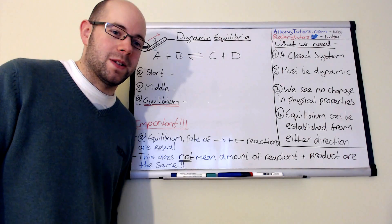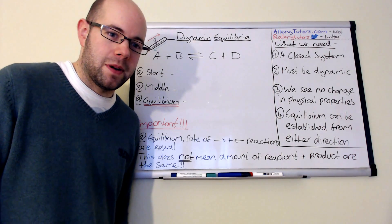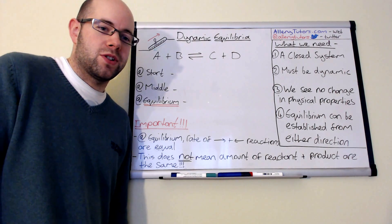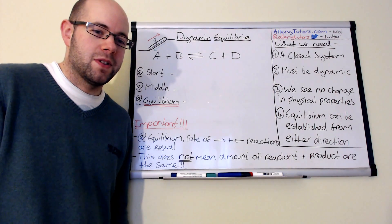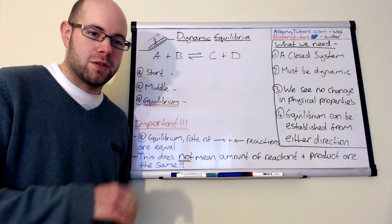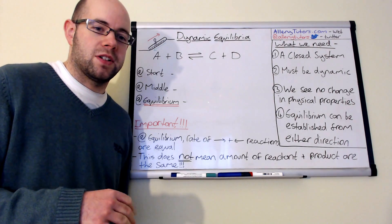Dynamic equilibrium is a very important part of chemistry mainly because it exists in just about nearly every chemical reaction that you have. In this video we're going to show you the introductory parts of dynamic equilibrium and we'll go through a generic example and point out some of the key points that you need to know when a reaction establishes equilibrium.